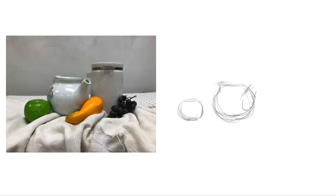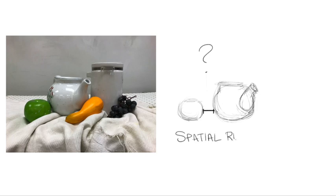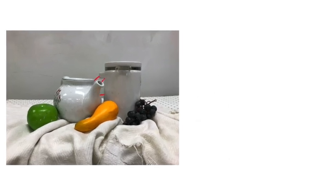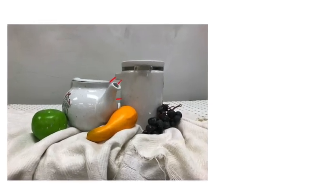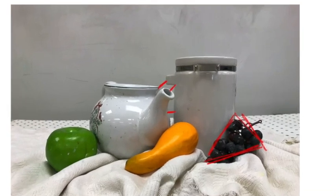In this drawing I fixed the proportions, but now we have another issue — it's the space between the items here. That's a spatial relationship problem. Spatial relationship is just referring to the way things are placed, and how close or how far they are from each other.